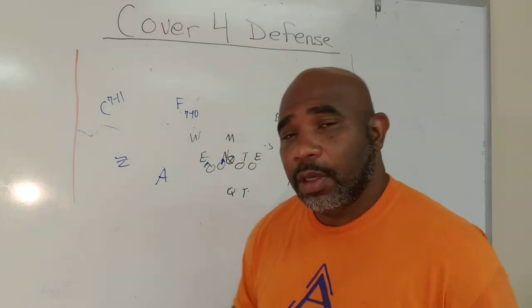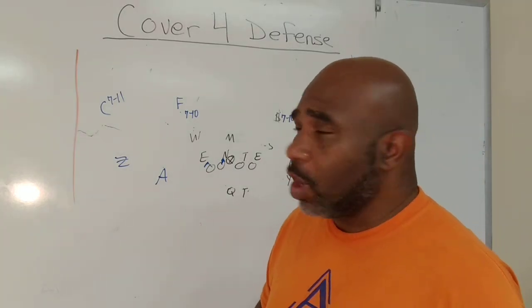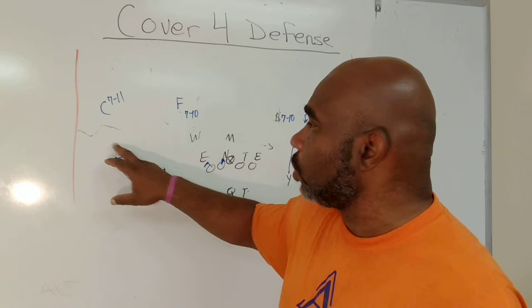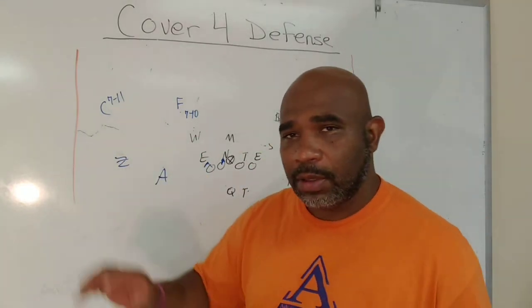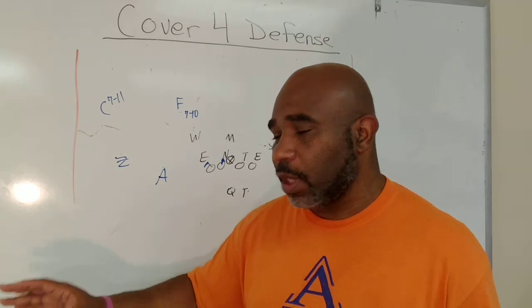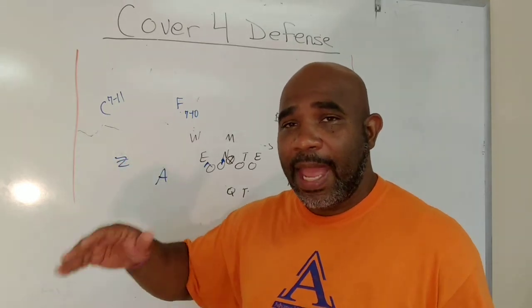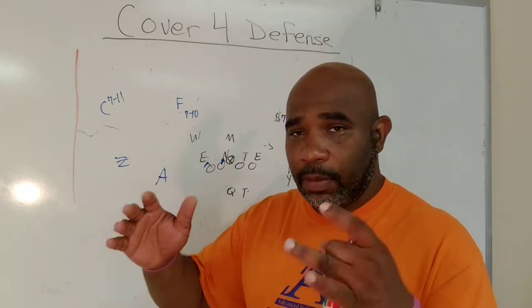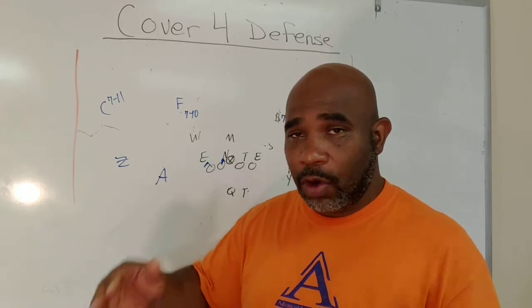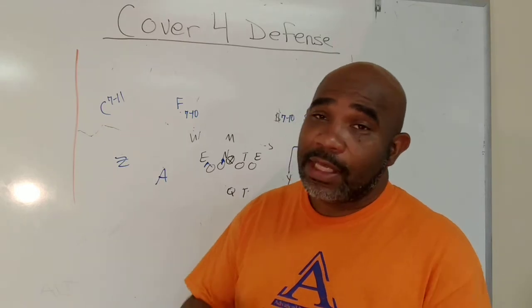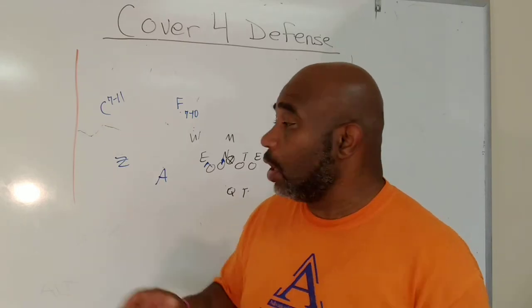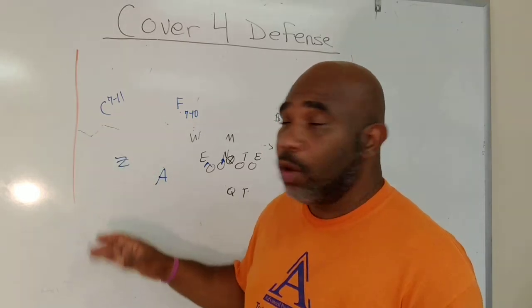However, some teams run a variation where these corners are in press. Remember, we said there were two types. You got to define your coverage as MOD, man only deep. Once they become a deep receiver, they go past vertical. Whenever I define my vertical, if they pass vertical, we're man coverage. Now that is susceptible to deep road routes, but then there's man everywhere he goes.